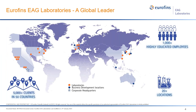Eurofins is a global leader in testing with more than 58,000 employees, 900 laboratories in 54 countries. Eurofins EAG is a division of Eurofins specializing in materials testing with over 40 years of experience. We have more than 600 employees and 20 laboratory facilities all over the world, and we have more than 2,500 different types of testing equipment and support over 4,000 different clients.